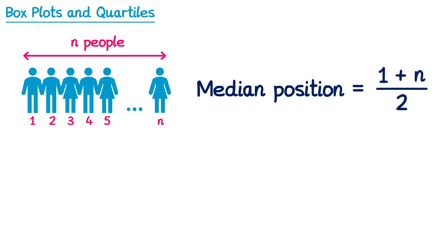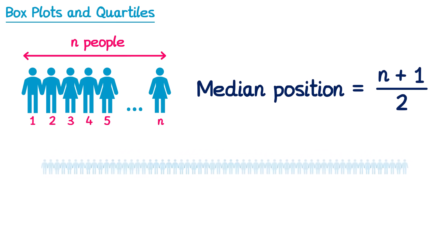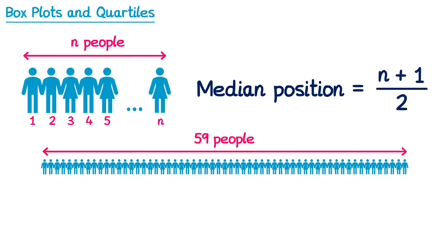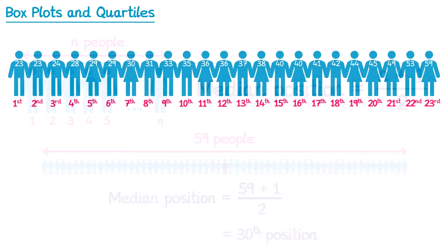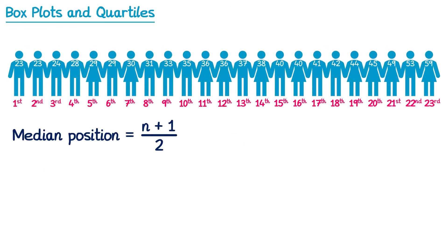Normally we write this formula the other way around — we like to write n plus 1 over 2. So for example, if you had a really long line with 59 people, to find the position of the median person you would take 59, add 1, and then divide by 2. This gives you 60 divided by 2, which is 30. So the middle person's in the 30th position. Now let's return to that list of adults. To locate the median person we do n plus 1 divided by 2, which was the 12th person — this person here was the median.